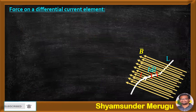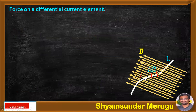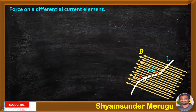Coming to the derivation part, let us consider a current element IdL bar, which is carrying the current I, and the length of the conductor is L. This differential current element is kept in the presence of a magnetic field of flux density B bar.